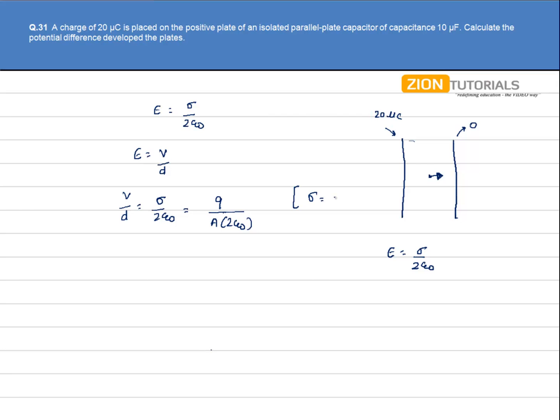So sigma is Q by A, that is the surface charge density. So I can rearrange it as V into epsilon not into area upon D divided by Q by 2. So we have V into C is equal to Q by 2.